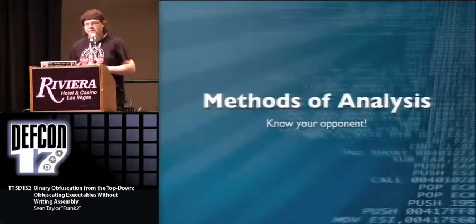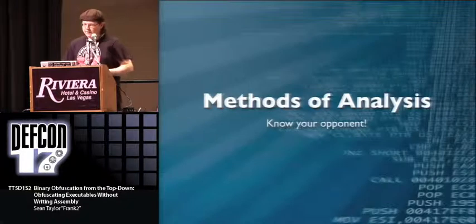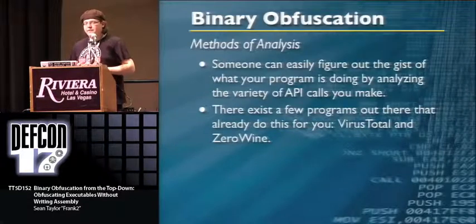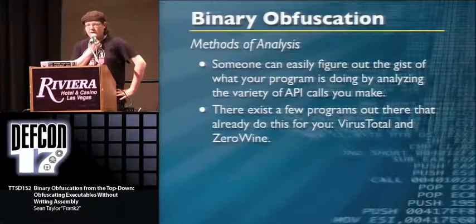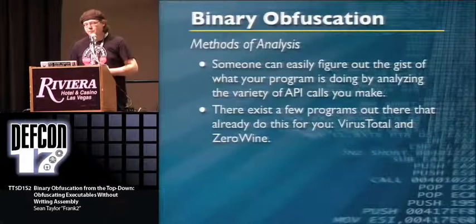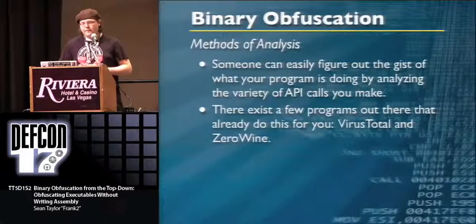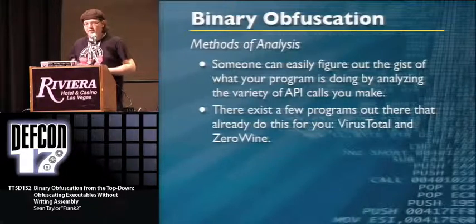There are also various analysis methods people employ, which matters if you want to leverage the psychological annoyance factor. API analysis is very common — you look at a program and see it's using InternetURLOpenA and writing a file to the hard drive, so it's probably a downloader. You can basically determine what a program is doing just from its API calls.